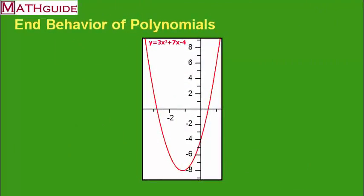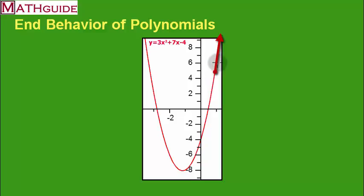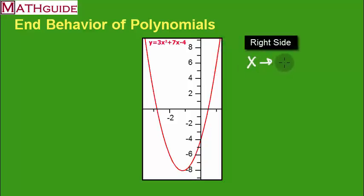Here we have the equation y equals 3x squared plus 7x minus 4. I've graphed it and you've got a picture of it. Let's talk about the left and right side. On the right side, the x values keep on getting bigger and bigger. This part of the curve is just going to keep on going up and right forever. So we say that x keeps going to positive infinity.